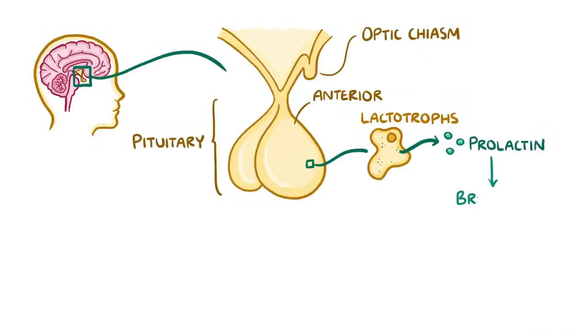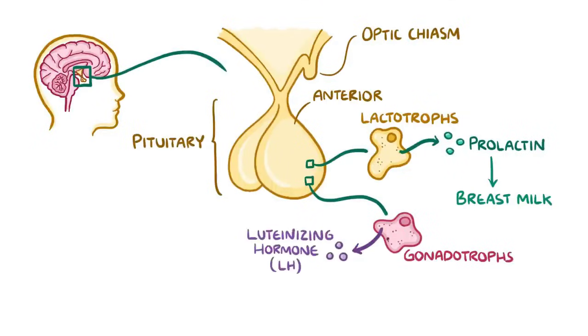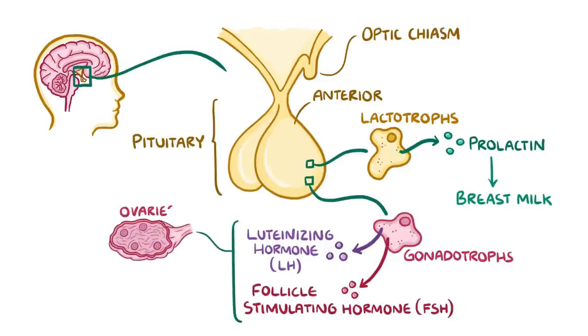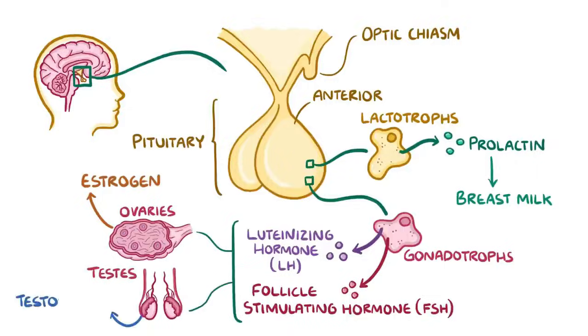Prolactin stimulates breast milk production. Another group of cells that are found in the anterior pituitary are gonadotrophs, and they secrete two gonadotropic hormones, luteinizing hormone or LH and follicle-stimulating hormone or FSH, both of which stimulate the ovaries in women which make estrogen, and stimulate the testes in men which makes testosterone.